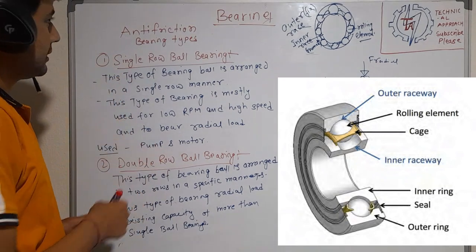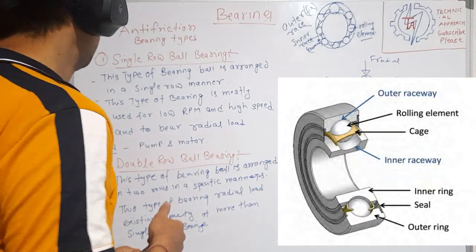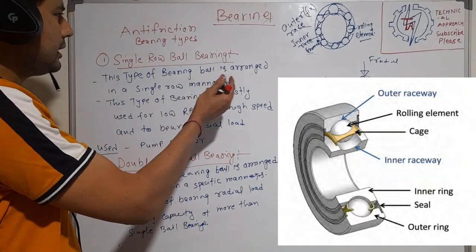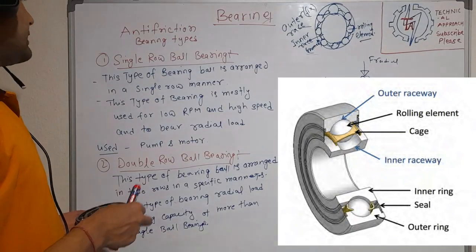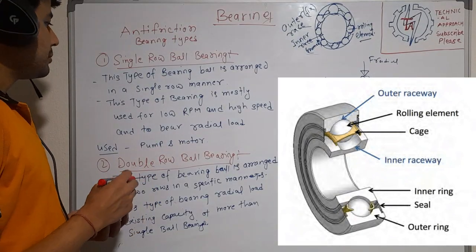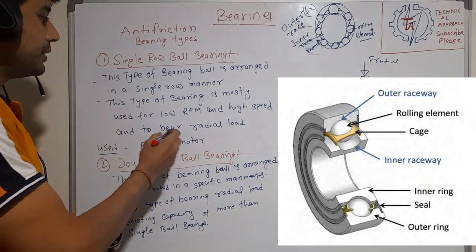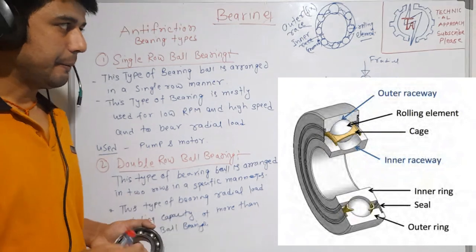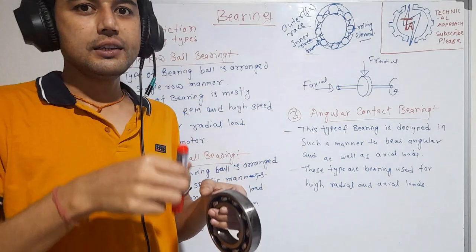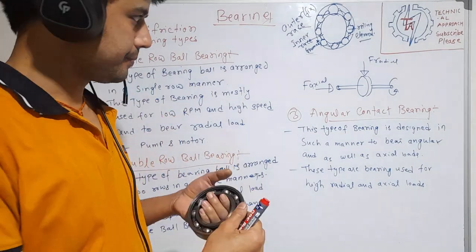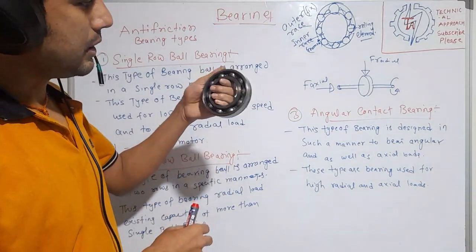The first type of ball bearing is the single row ball bearing. In this type, balls are arranged in a single row manner. This type of bearing is mostly used for low RPM, high speed, and to carry radial load — meaning a load applied perpendicular to the shaft.